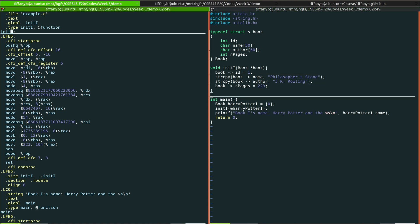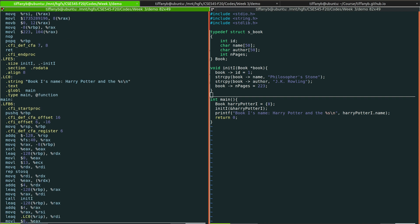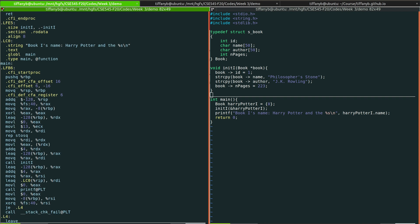In the generated assembly code, we can find label init_i and label main, which represent function init_i and main respectively. Also in the main function, you can find instructions call init_i and call printf, which map to the statements in the main function.